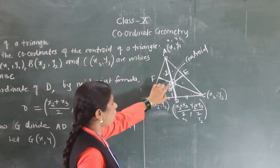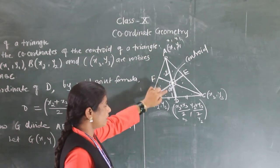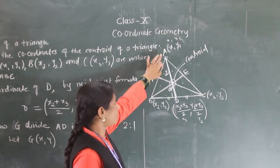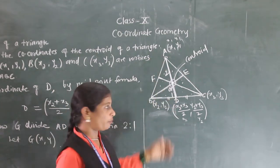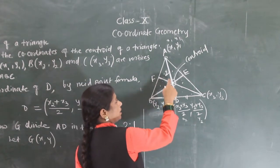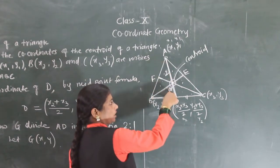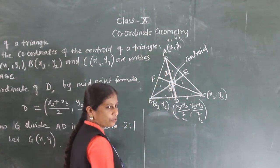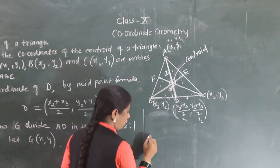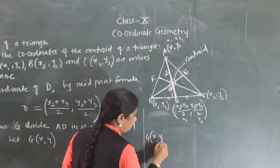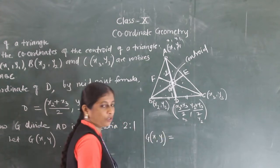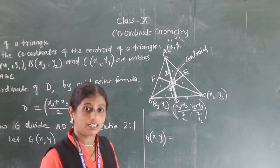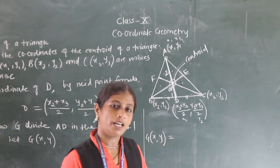So here we have to find the coordinates of point G, where G divides AD internally in the ratio 2:1. We take G as (x, y) and use the section formula: G(x, y) equals M·x2 + N·x1 upon M+N, comma M·y2 + N·y1 upon M+N.